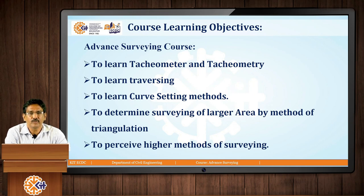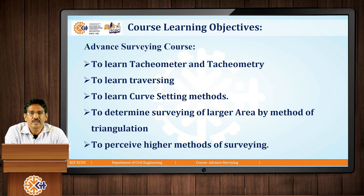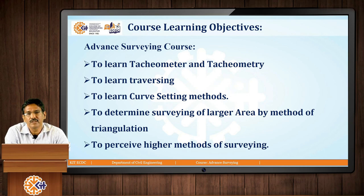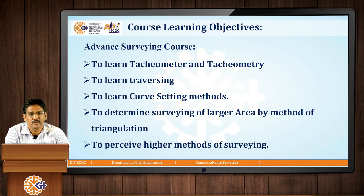Let us first have an overview of this course. Our advanced surveying course covers tachymetry and tachymetric principles, instruments, tachymeter and tachymetry. We learn about traversing, curve setting methods, and surveying of larger areas by the method of triangulation, which we also call geodetic surveying. We also pursue higher methods of surveying like remote sensing, GIS, and aerial photogrammetry.